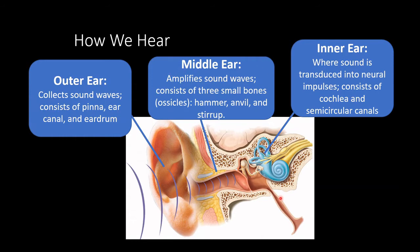Next is our middle ear, which serves to amplify sound waves. It consists of three small bones called ossicles — colloquially the hammer, the anvil, and the stirrup, also known as the malleus, incus, and stapes. These bones convert the vibration of the air into physical motion, and they push onto the cochlea — a snail-like structure containing fluid. Sound is transduced by motion in this fluid into neural impulses.